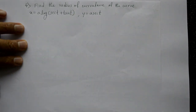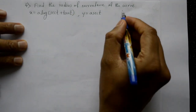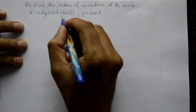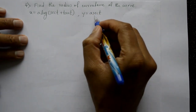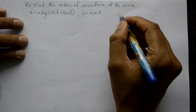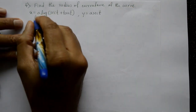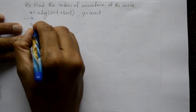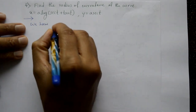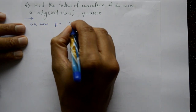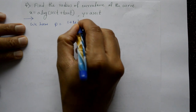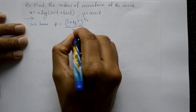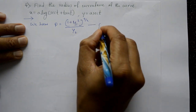Find the radius of curvature of the curve x = a·log(sec t + tan t) and y = a·sec t using Cartesian form. We have the formula: ρ = (1 + y₁²)^(3/2) / y₂. This is equation number one.